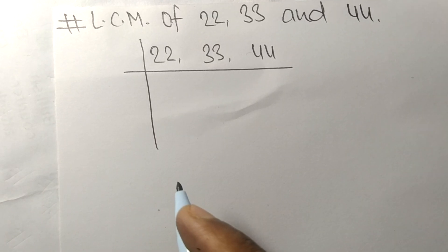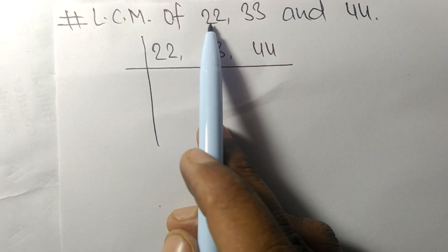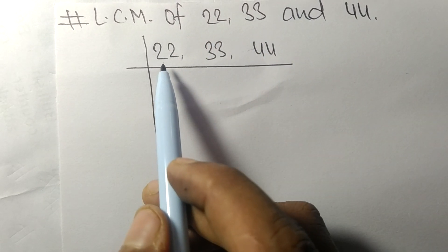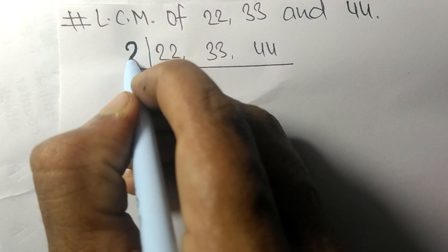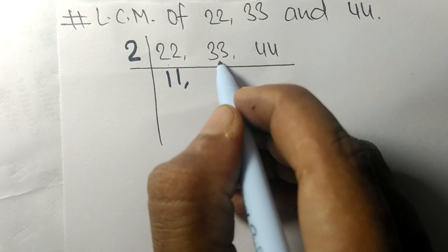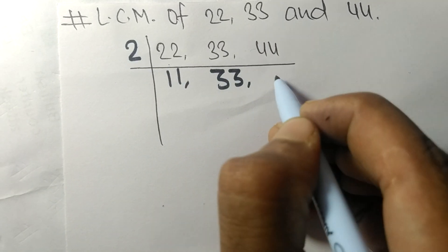So today in this video we shall learn to find the LCM of 22, 33, and 44. So 22 and 44 are divisible by 2. 2 times 11 means 22. 33 is not divisible by 2, so it stays the same. 2 times 22 means 44.